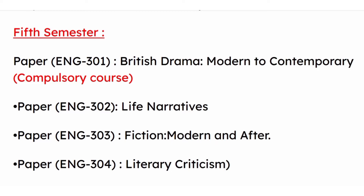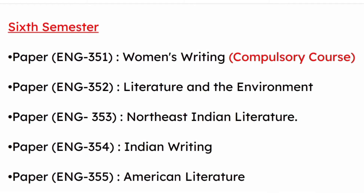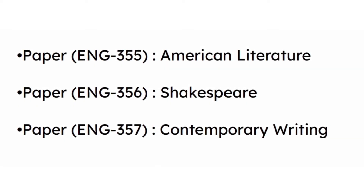Paper ENG 254: British Poetry, Victorian to Postmodern. Fifth semester — paper ENG 301: British Drama, Modern to Contemporary. Compulsory course paper ENG 302: Life Narratives. Paper ENG 303: Fiction Modern and After. Paper ENG 304: Literary Criticism. Sixth semester — paper ENG 351: Women's Writing. Compulsory course paper ENG 352: Literature and the Environment. Paper ENG 353: Northeast Indian Literature. Paper ENG 354: Indian Writing. Paper ENG 355: American Literature. Paper ENG 356: Shakespeare. Paper ENG 357: Contemporary Writing.